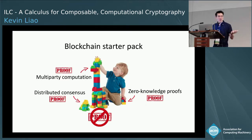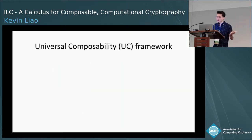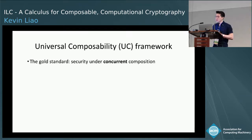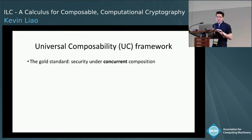In cryptography, this is addressed through the theory of universal composability. It's the widely established gold standard for proving security of your schemes. You get security under concurrent composition: if I have a UC-secure protocol, it maintains its security properties even when run concurrently with arbitrary other protocols.